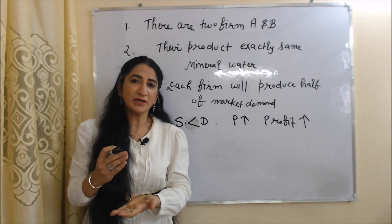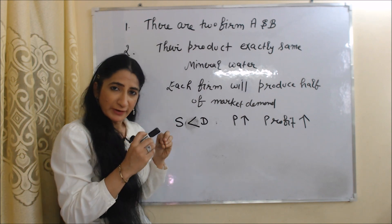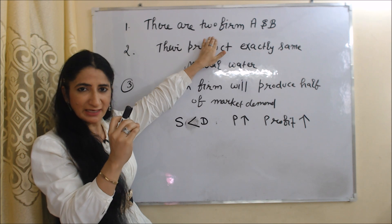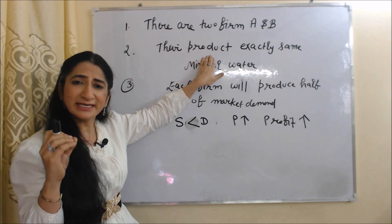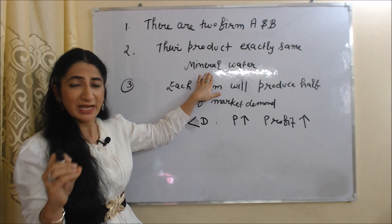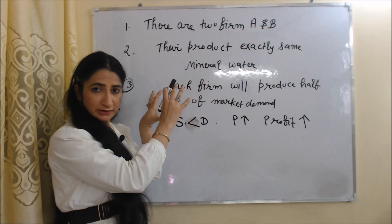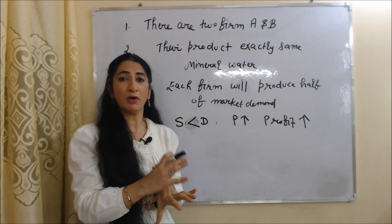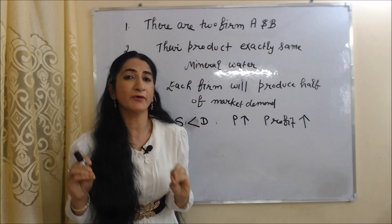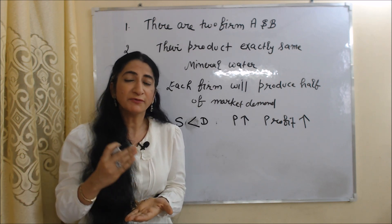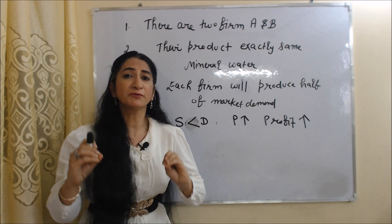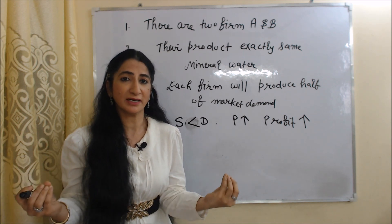A few things you need to remember about this model. First, we assume there are only two firms A and B and their product is exactly the same. In this model, we assume their product is mineral water. And the third most important thing: each firm will produce half of market demand.